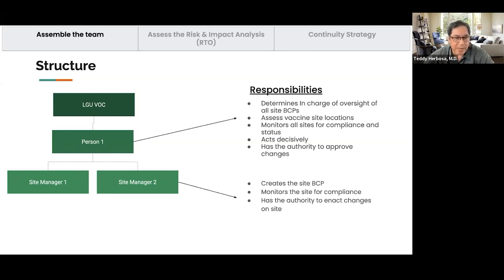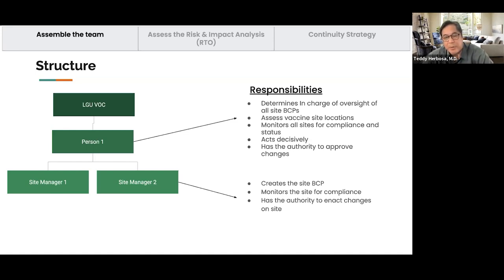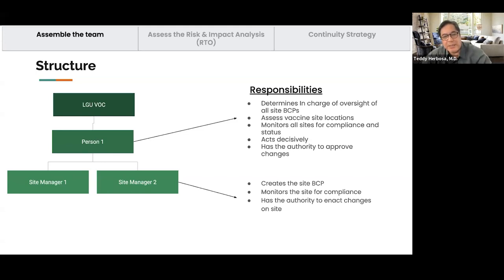You need to act decisively as the person in charge. The problem in a crisis is that you will often need to act with little information, and sometimes you'll realize that what you did was not the most appropriate action — but you're free to change course as more data and information come in. The chief or your supervisor must give you the authority to make certain changes. For specific site management — for example, deans — each would have their own site continuity plan.